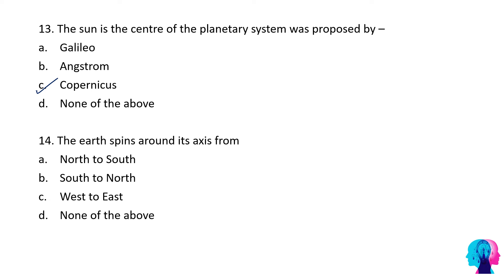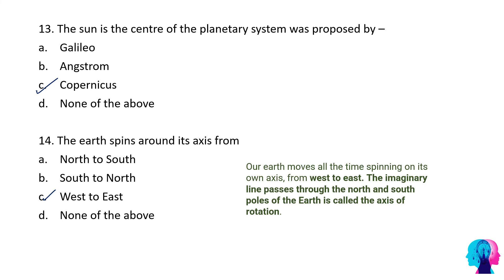Fourteenth question: The earth spins around its axis from north to south, south to north, west to east, or none of the above? The earth spins around its axis from west to east. How? Our earth moves all the time spinning on its own axis from west to east.